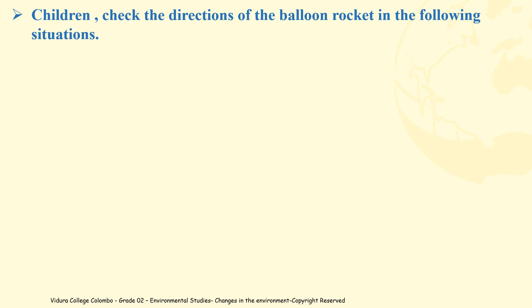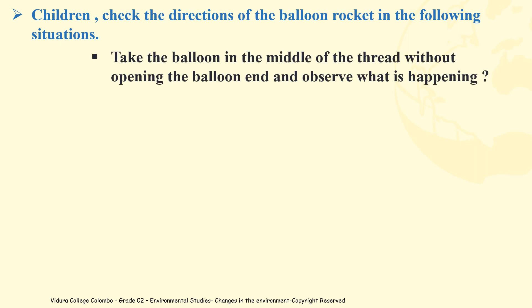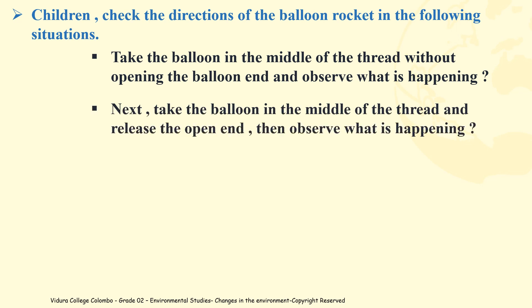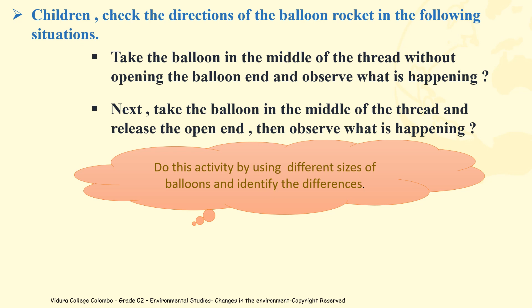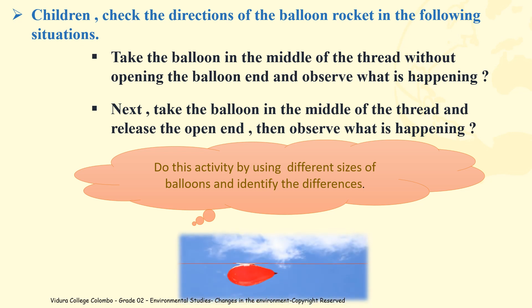Children, check the directions of the balloon rocket in the following situations. Take the balloon in the middle of the thread without opening the balloon end and observe what is happening. Next, take the balloon in the middle of the thread and release the open end, then observe what is happening. Do this activity using different sizes of balloons and identify the differences.